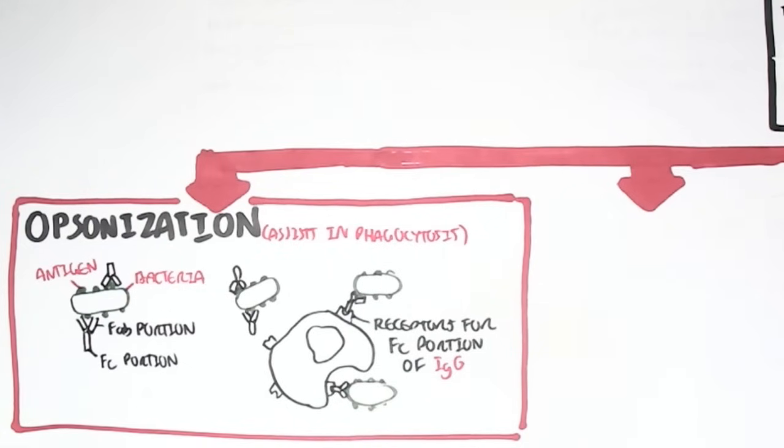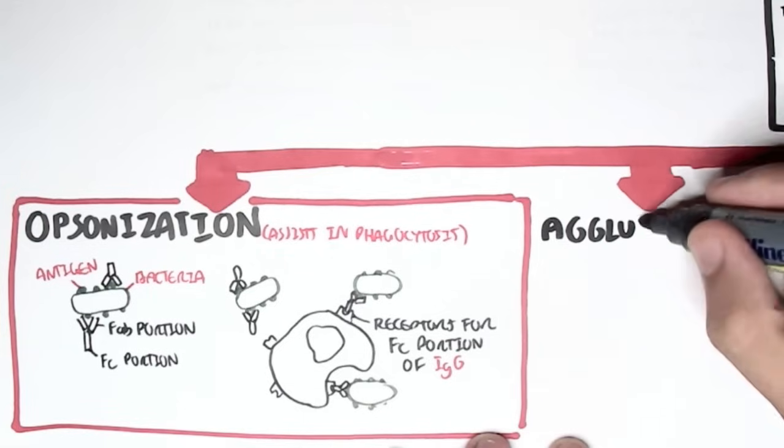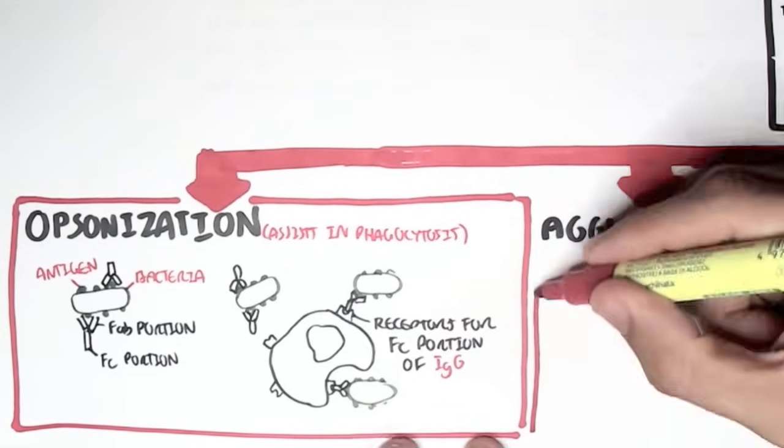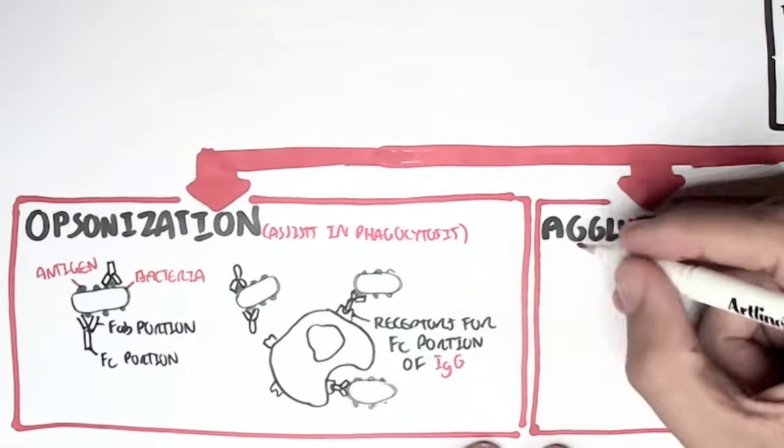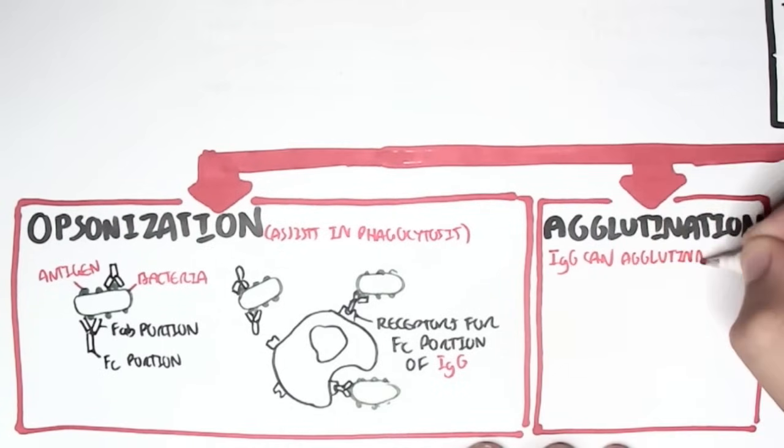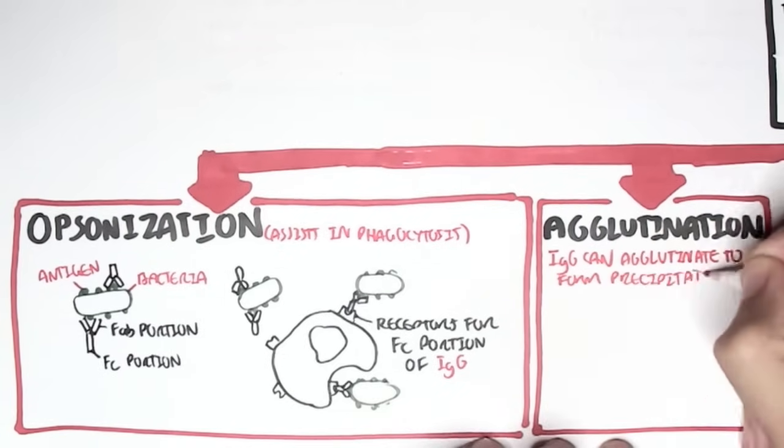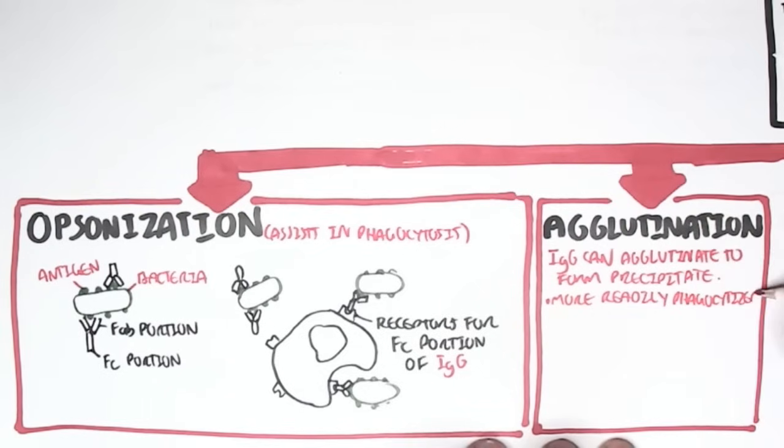The second thing IgG can perform is what's called agglutination. And this is where it can essentially form precipitate. It can form soluble antigens that allows it to be more easily phagocytized.